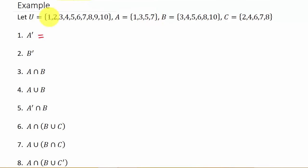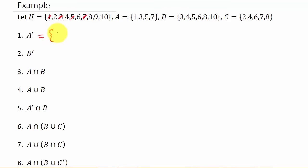Set A contains the numbers one, three, five, and seven. So which elements are not in set A but are in the universal set? Well, that's two, four, six, eight, nine, and ten. So the complement of A is {2, 4, 6, 8, 9, 10}. And there's your answer.